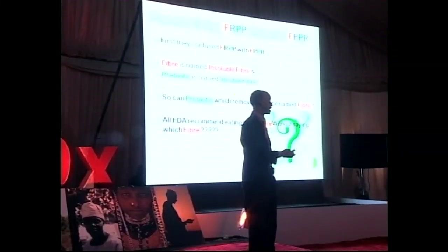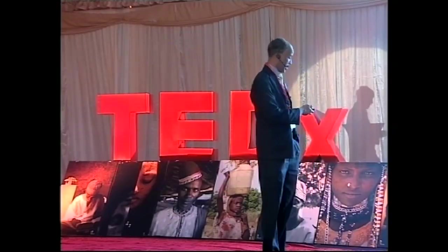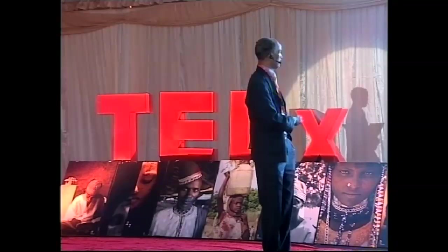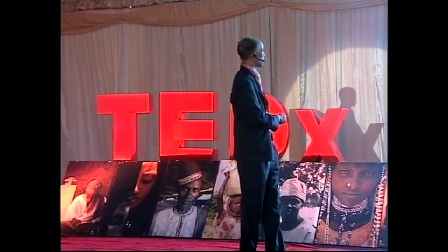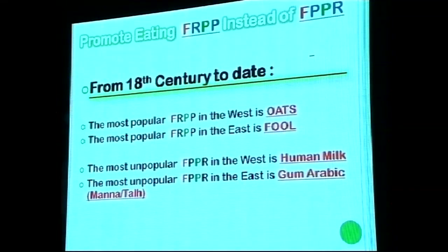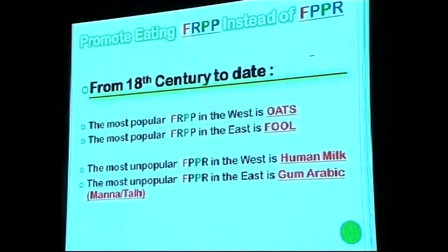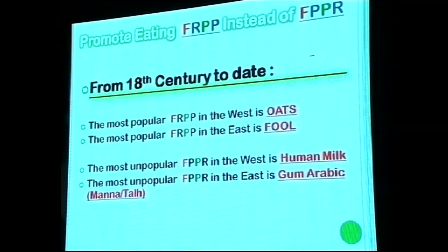Health authorities tell you to eat more fiber every day, whereas what you actually need is more prebiotic than fiber. This misconception has persisted since the 18th century. The most popular fiber-rich, prebiotic-poor food in the West is oats, and 80% of the US population eats oats every morning.